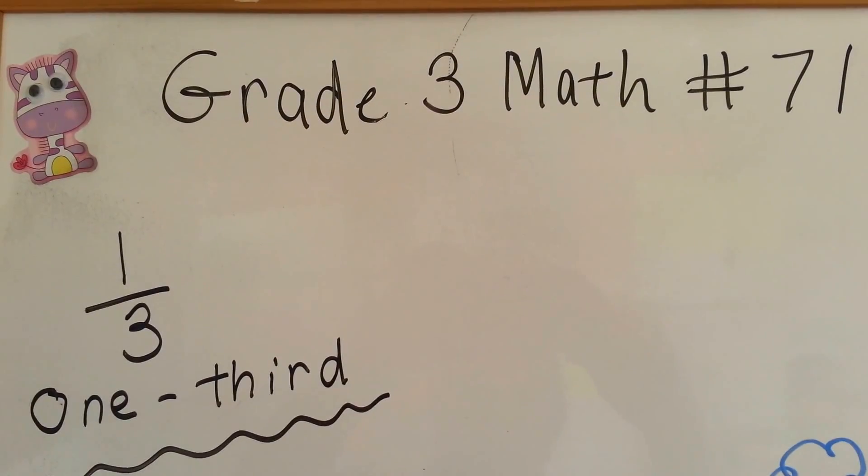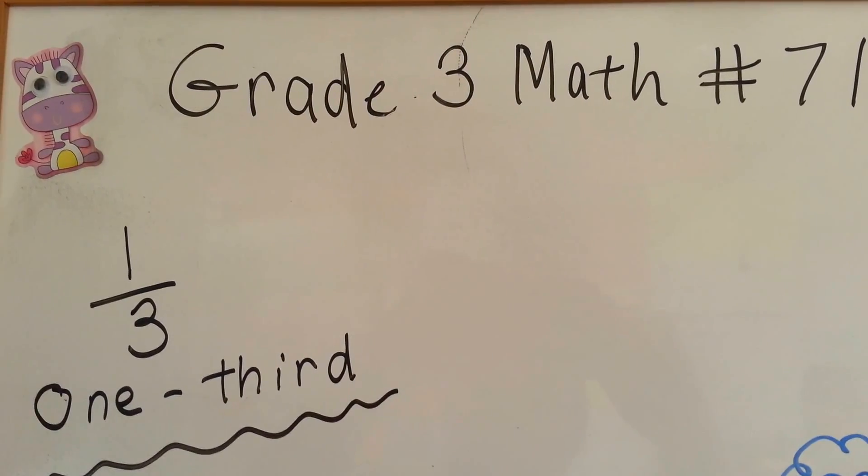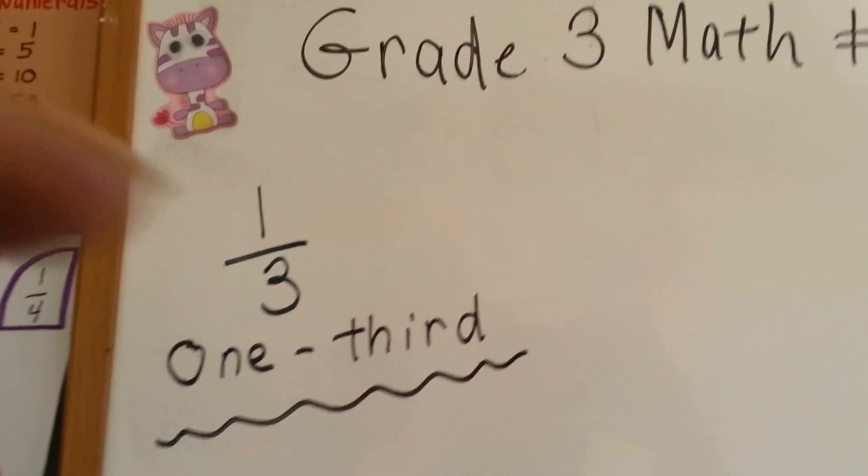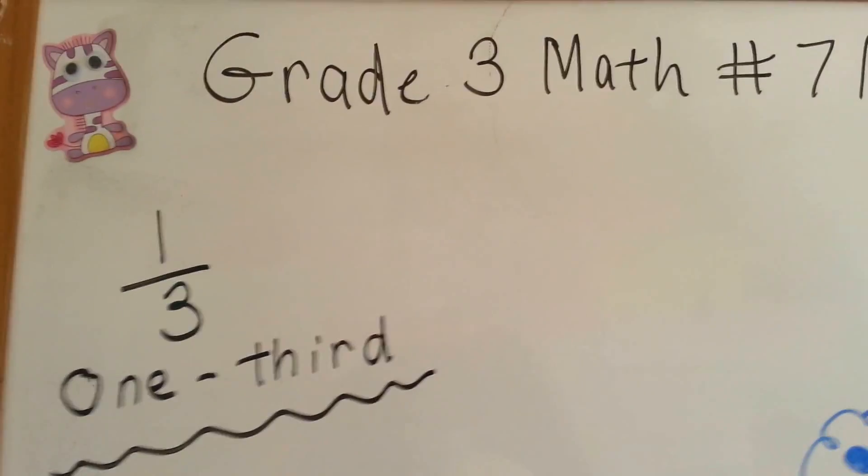Grade 3 math number 71. One-third. That's what we're going to talk about today.